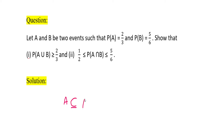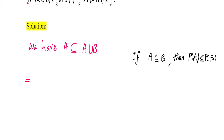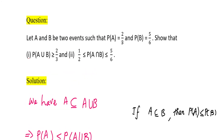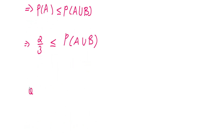Since A is contained in A∪B, we can apply the theorem: if A is contained in B, then P(A) ≤ P(B). This gives us P(A) ≤ P(A∪B), which can be written as P(A∪B) ≥ 2/3. This completes the first part of the proof.